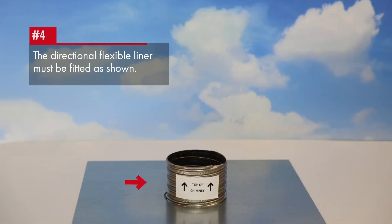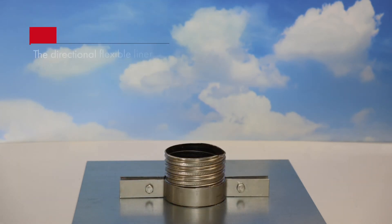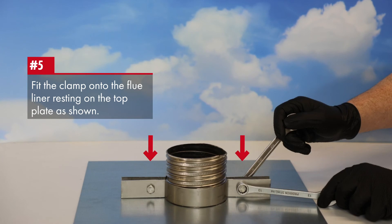The flue is directional and must be fitted as shown. The clamp is fitted onto the flue to take the weight of the liner and rests on the top plate.